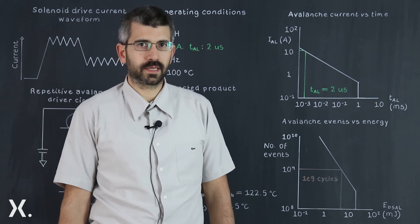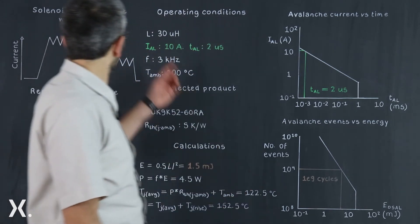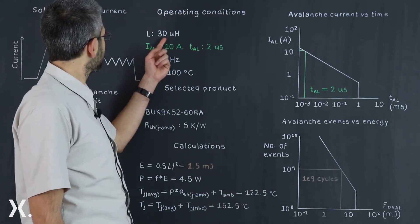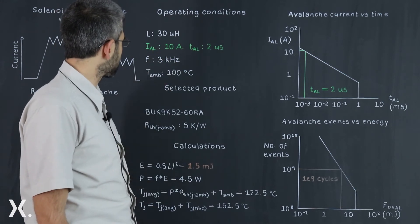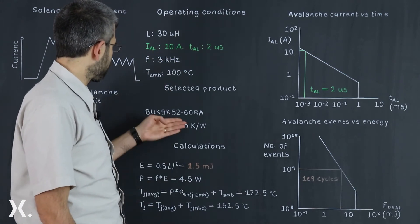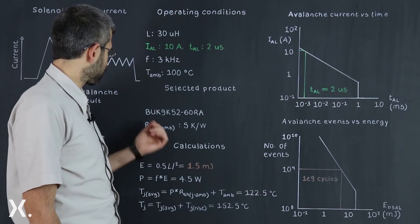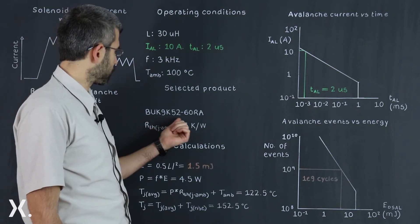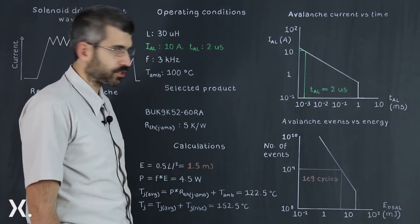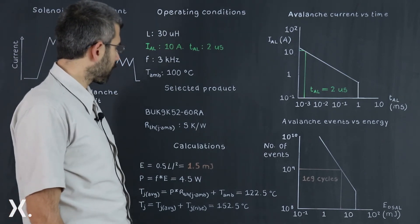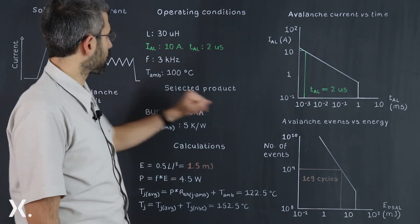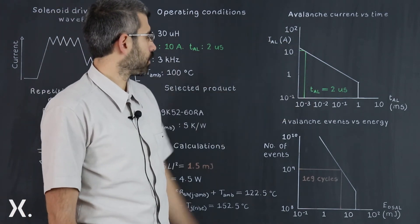So let's look at an application where we drive 30 uH at an avalanche current of 10A at 3 kHz. We select a MOSFET BUK9K52-60RA, which is a 16A 60V device, and we take the avalanche current and trace it through the first graph.